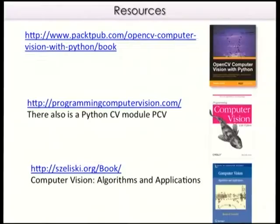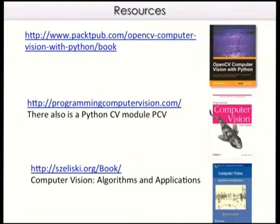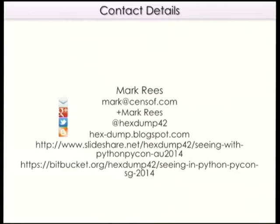Some resources: both those books are really good. Be a little careful — a lot of OpenCV material is about the C interface, but if you use CV2 you can pretty well translate line for line. The computer vision book was good because it allowed me to play with algorithms in pure Python. We'll forgive the guy at the bottom for working at Microsoft — it's an excellent book if you want to know more about computer vision and algorithms. There's so much more I could talk about for hours. If you go to SlideShare, look for Hexdum42 — you'll find the slides, and the Bitbucket repository is there if you want to play with the IPython notebooks. Thank you.